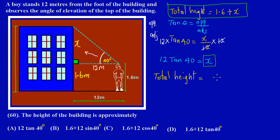Plus x, and x is 12 tan 40 degrees. So this is the option that we are looking for. We have 1.6 plus 12 tan 40, and that obviously is option D.